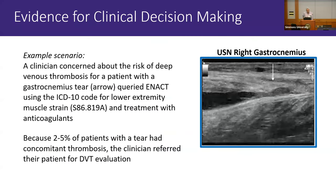For the deep vein thrombosis query: the question was whether a calf muscle injury puts you at higher risk. The query looked at ICD codes for lower extremity muscle strain and whether patients were being treated with anticoagulants. Results showed that 2-5% of patients with a tear were on anticoagulants, presumed to be due to thrombosis. Based on that finding, this person was referred by their primary care physician for deep vein thrombosis evaluation.